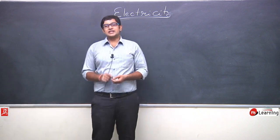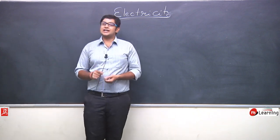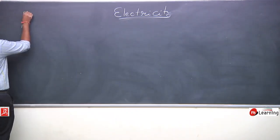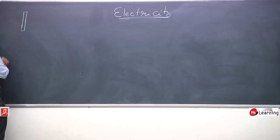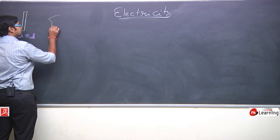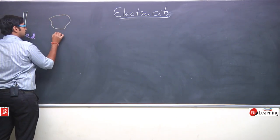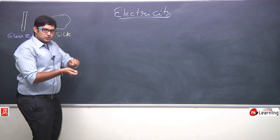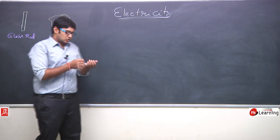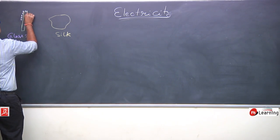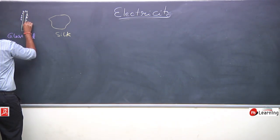Let us understand what conclusion Benjamin Franklin gave. Franklin said that if this is a glass rod and this is silk, when we rub the glass rod on the silk, this glass rod acquires positive charge.